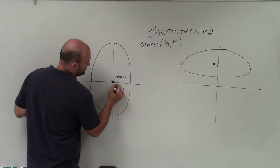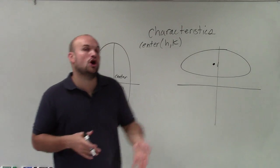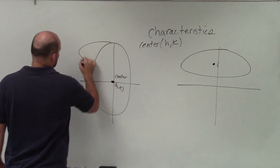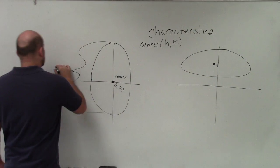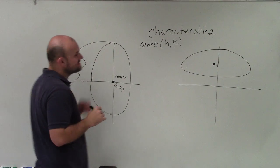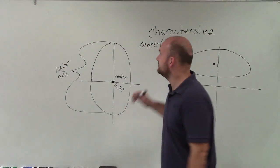Now, you can see that this ellipse is elongated vertically, right? So this is what we call my major axis.